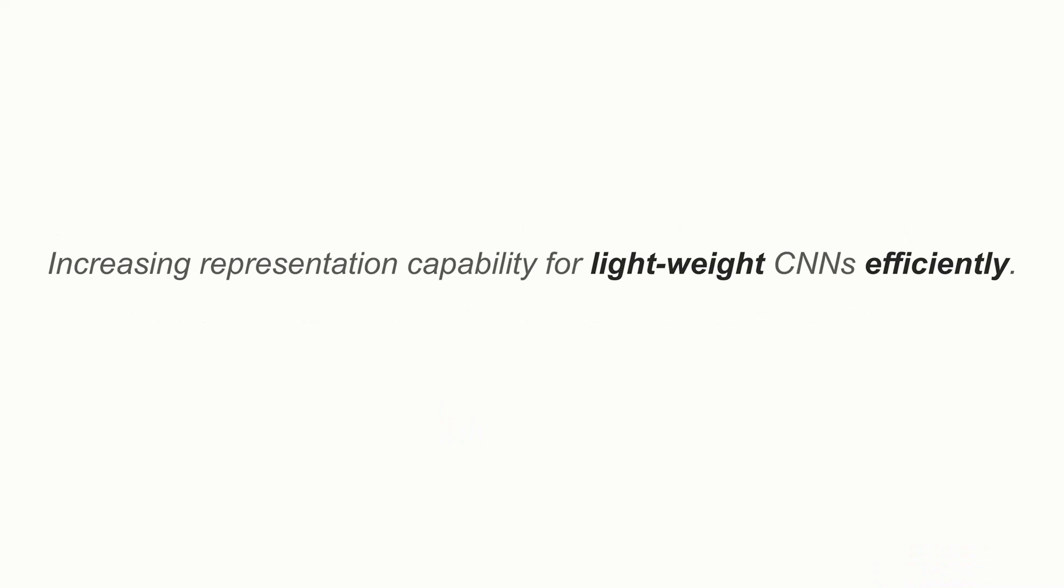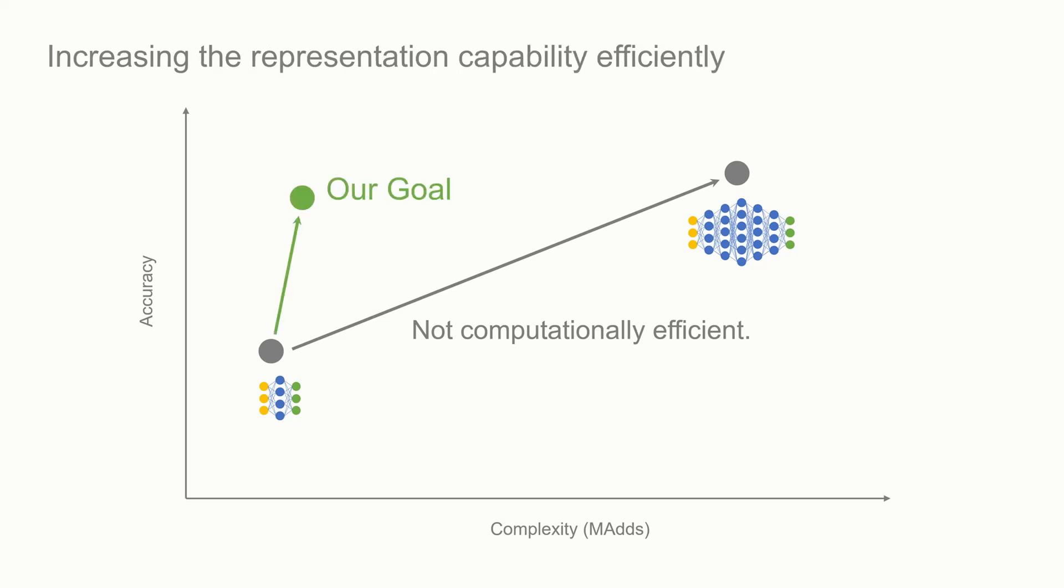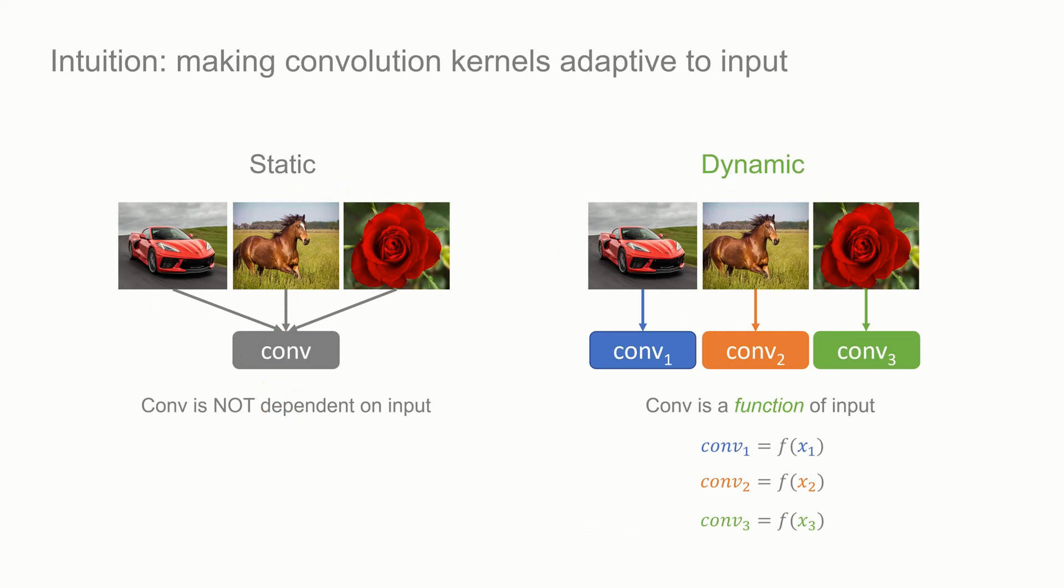In this work, our goal is to increase the representation capability for lightweight CNNs like MobileNet efficiently. A simple solution is to increase the width or the depth of the network. However, this is not efficient, as the computational cost increases proportionally. Now our goal is to find an efficient solution with low computational cost.